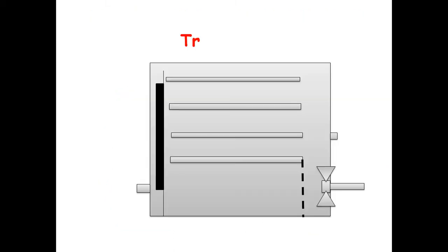First, let us learn about tray dryers. It works on the principle that hot air is continuously circulated and there occurs forced convection and heating to remove moisture from the solids placed in the trays. Simultaneously, the moist air is removed partially. Now let us see the construction. The construction of the tray dryer consists of a rectangular chamber whose walls are insulated from inner and outer sides.